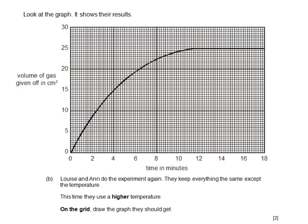Look at the graph showing their results. Louise and Anne do the experiment again, keeping everything the same except the temperature — this time they use a higher temperature. On the grid, draw the graph that they should get. It's important to understand there are two marks: one for showing that the graph has a steeper gradient, because the reaction is going faster initially, and secondly it must level off at exactly the same height as the original reaction, because we're using the same amount of reactants so we get the same volume of gas given off at the end.